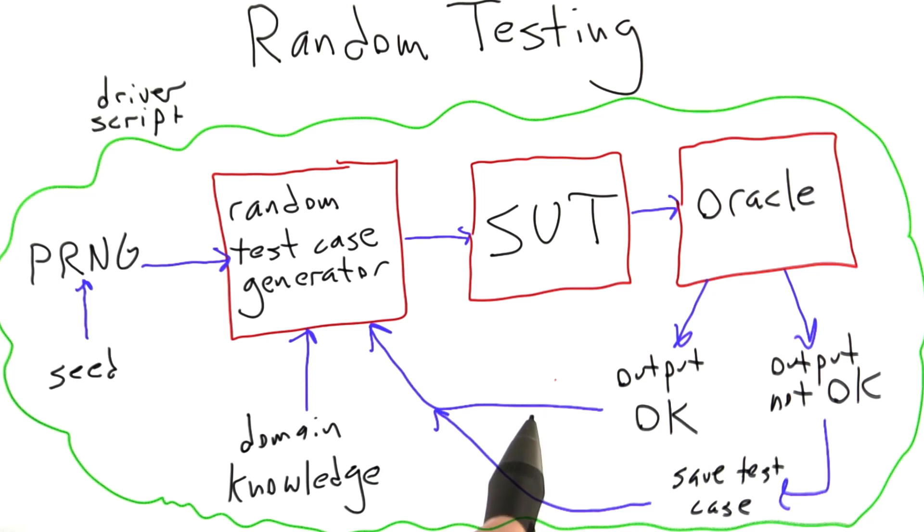What I'd like to do now is go over a couple of real examples. One of them involves a very large random tester testing quite complicated pieces of software. The other one is almost trivial - it's a tiny, almost one-line random tester that's testing a small function that I wrote.